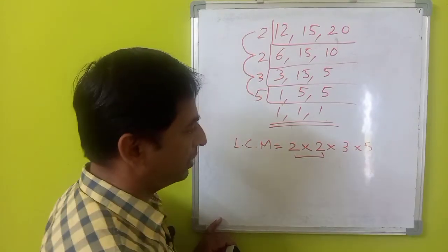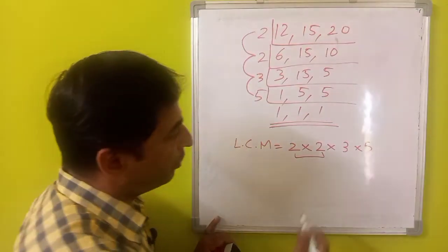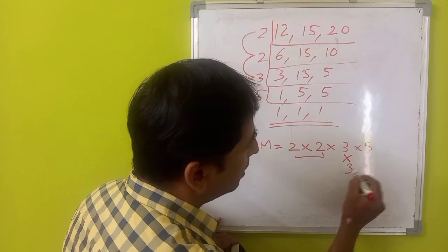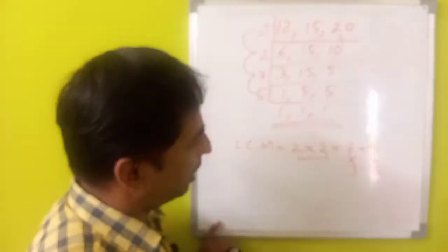So, here, 2 is in pairs. 3 is not and 5 is also not in a pair. So, if you take a pair. So, if you take a pair of these, then you will get a perfect square number.